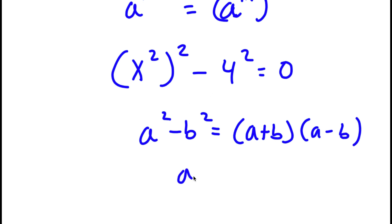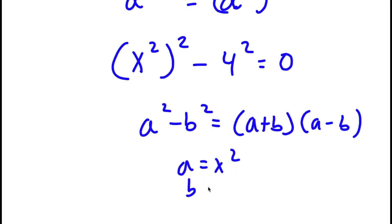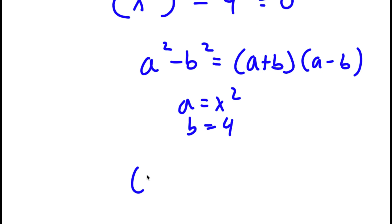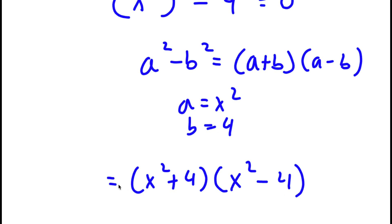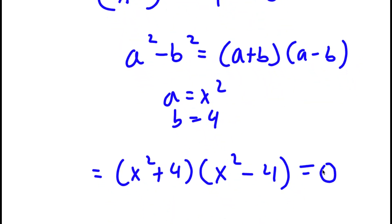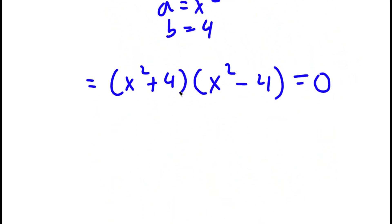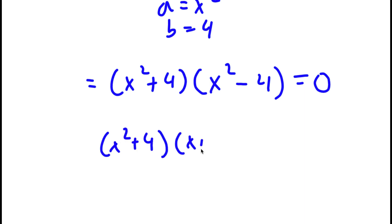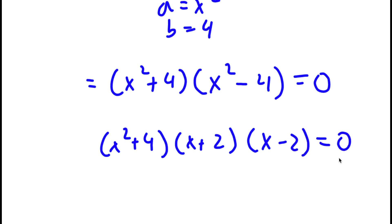In this case, a is equal to x to the power of 2, and b is equal to 4. So I have x to the power of 2 plus 4 times x to the power of 2 minus 4, equal to 0. And x to the power of 2 minus 4 is the same thing as x plus 2 times x minus 2. So now I have x to the power of 2 plus 4, times x plus 2, times x minus 2, equal to 0.